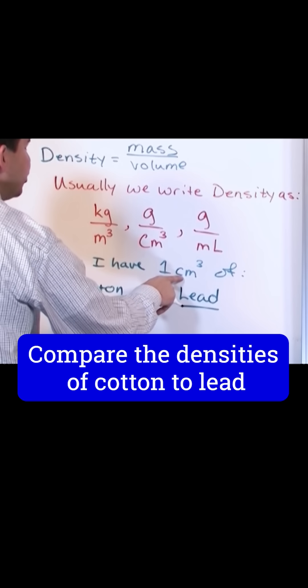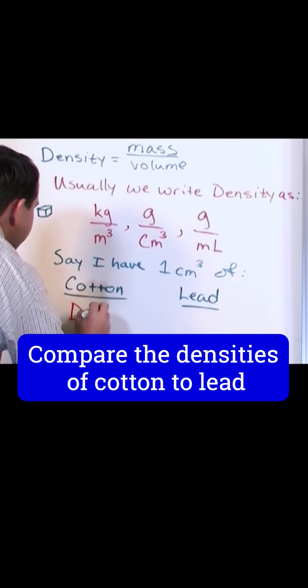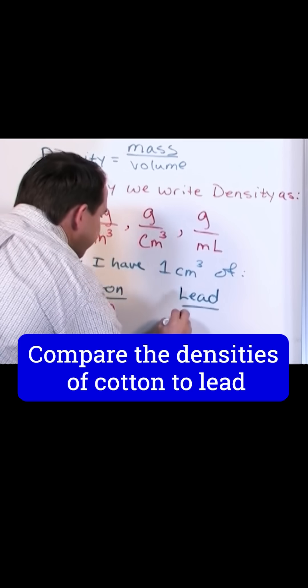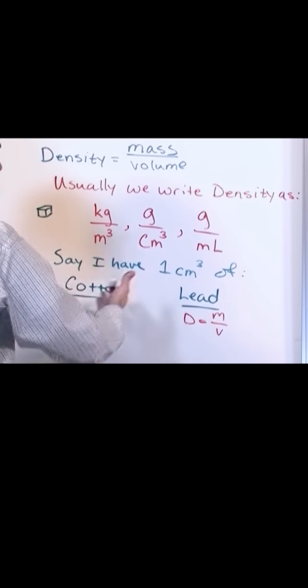Let's say that in both cases I only have one cubic centimeter of each of these things. So we say that the density is equal to the mass divided by the volume, for each case. But we know the volume is the same, we know we have one cubic centimeter of each thing.